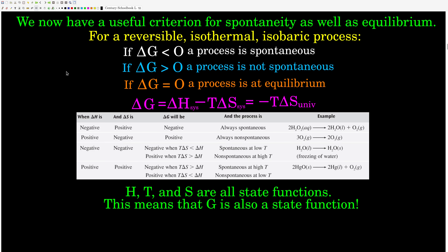So now we have a useful means of determining spontaneity — a criterion for spontaneity — as well as equilibrium: whether or not the system is at equilibrium, and if not, which way it'll go. Because delta G equals negative T times delta S of the universe, and for something to be spontaneous the entropy of the universe must increase, delta S of the universe is positive, negative T delta S of the universe is negative, so delta G has to be negative. If delta G is less than zero, the process is spontaneous. If delta G is positive, delta S of the universe is negative and that's not a spontaneous process. If delta G equals zero, then the system is at equilibrium.